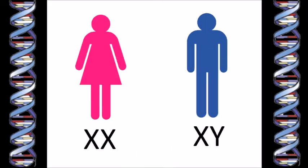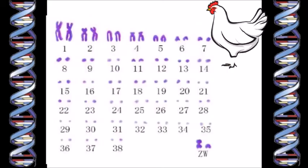This system works well for all mammals, but it doesn't work for birds. Chickens have 39 pairs of chromosomes, 38 pairs of autosomes, and one pair of sex chromosomes.